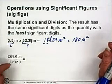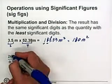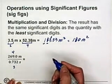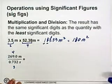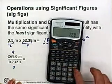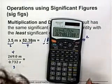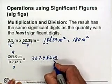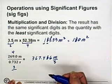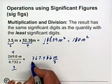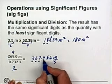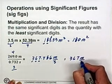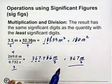When I go to division, I follow the same rule. I have 4 significant figures in 269.0 metres, and I have 3 significant figures in 0.732 seconds. So when I do the division, 269 divided by 0.732, I get 367.486 metres per second. But I'm only allowed 3 significant digits. So I look at my answer: the 3's fine, the 6's fine. I look at my 7, and it's followed by a 4, so I can stick with the 7. My answer becomes 367 metres per second — the correct answer using the appropriate significant figures.